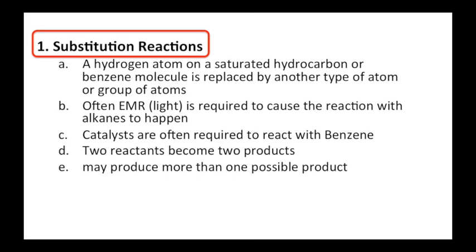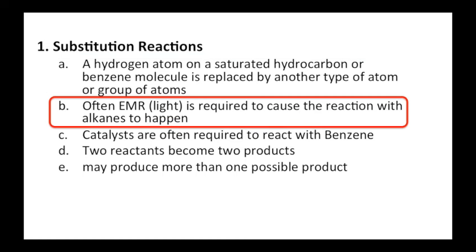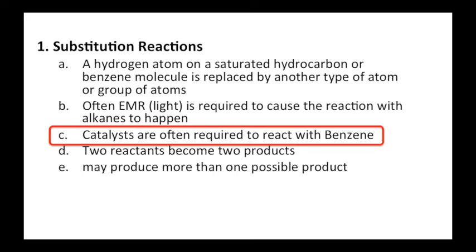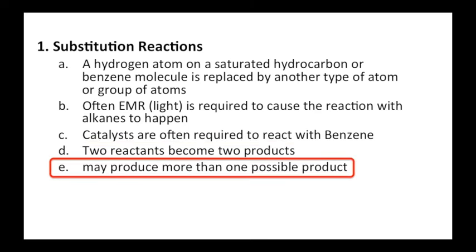Here we're going to see a substitution reaction. So in a substitution reaction, a hydrogen atom on a saturated hydrocarbon or benzene molecule is replaced by another type of atom. Often light has to be present for this to happen. Catalysts are often required, with benzene in particular. Two reactants become two products and it may produce more than one possible product.